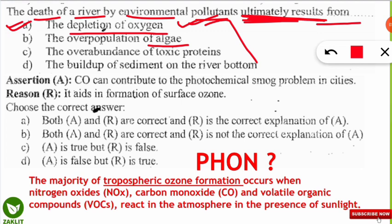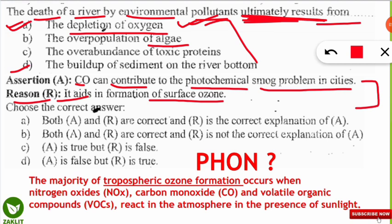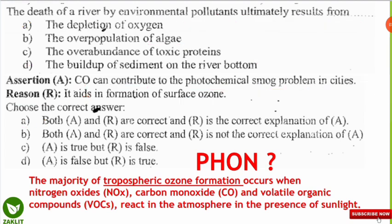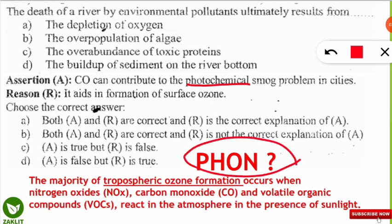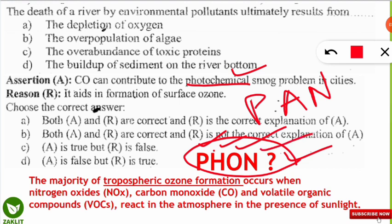The second question is an assertion and reasoning type. The assertion states carbon monoxide can contribute to the photochemical smog problem in cities, and the reason states it aids in the formation of surface ozone. Both assertion and reason are correct and the reason is the correct explanation. Photochemical smog is composed of PHON — P for PAN (peroxyacetyl nitrate), H for hydrocarbon, O for ozone, and N for oxides of nitrogen (nitrogen dioxide).